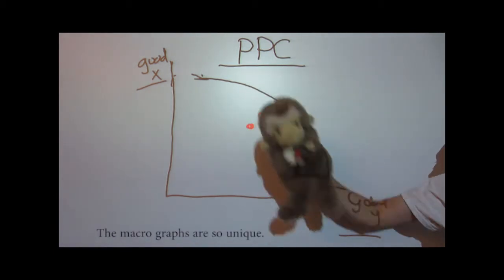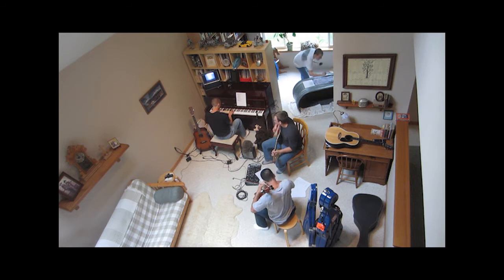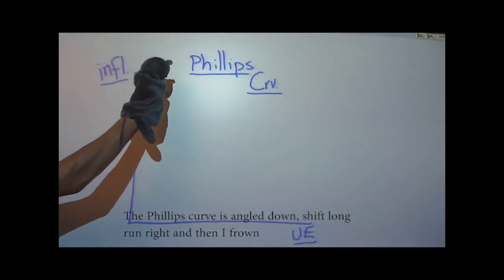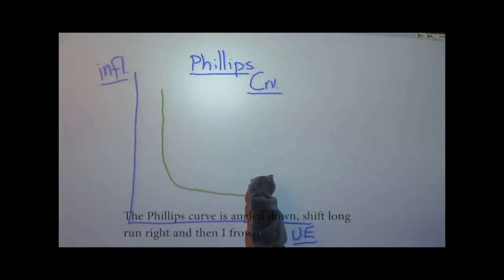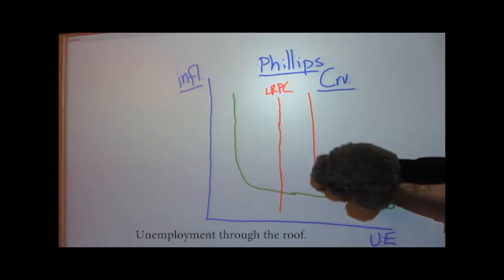The macrographs are so unique. The Phillips curve, bend down, shift long run right and then frown. Unemployment through the roof.